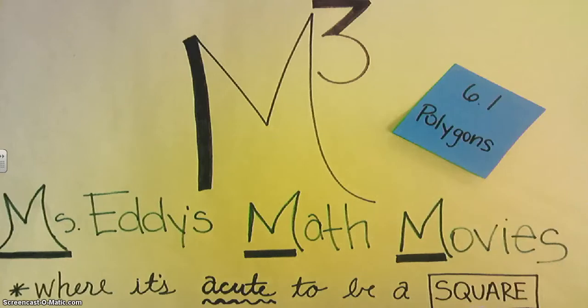Welcome back to Massetti's Math Movies, where it's cute to be a square. Today's lesson is 6.1, Polygons. By the end of the lesson, you'll be able to identify and describe polygons, as well as find angle measures in quadrilaterals.